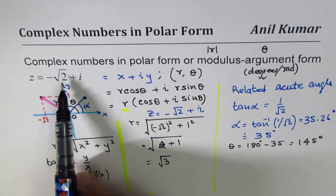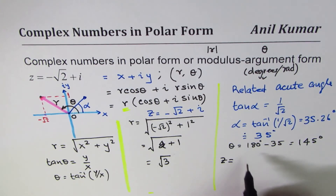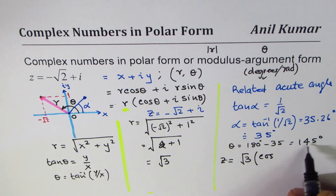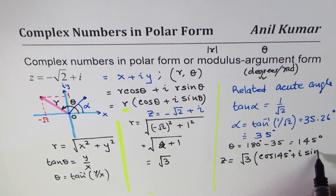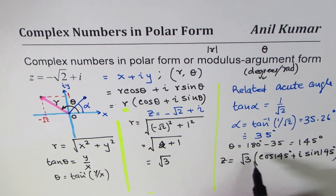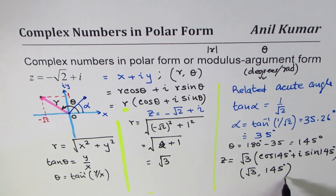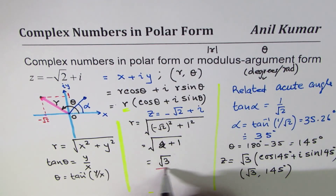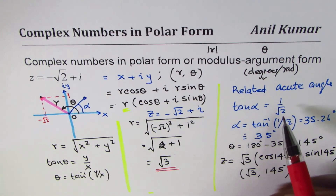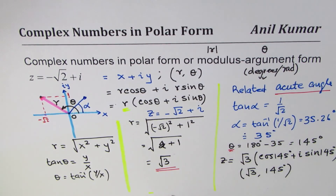Now we can write the complex number minus square root 2 plus i in polar form: z equals square root 3 times the quantity cos 145 degrees plus i sin 145 degrees. Alternatively, we can write this as (square root 3, 145 degrees), meaning the point is square root 3 units from the pole at an angle of 145 degrees. The key steps are: find r using the Pythagorean theorem — we got square root 3 — then find the related acute angle, then the actual angle theta.